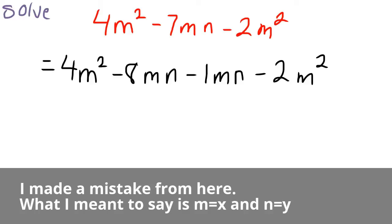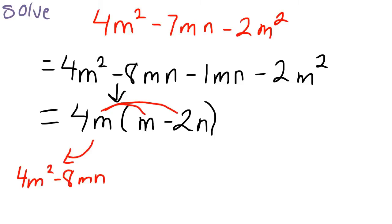Now we solve. So we split negative 7 to negative 8 and 1. Group by taking 4m out.